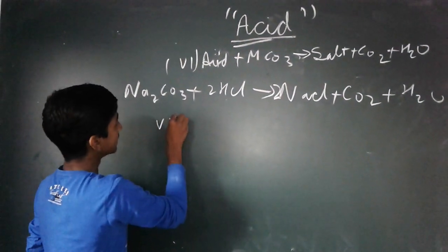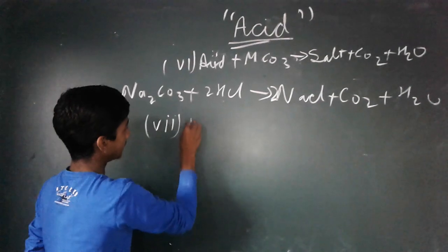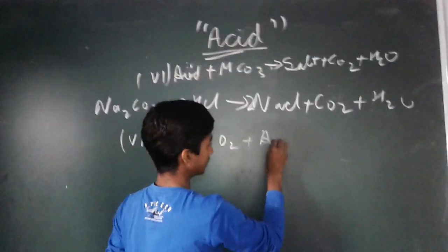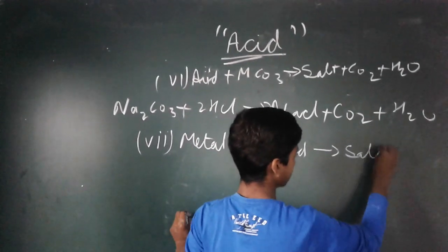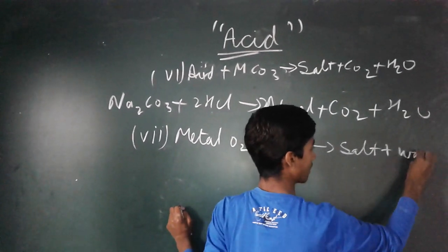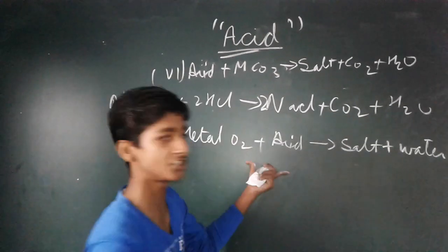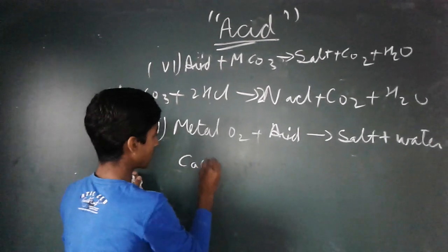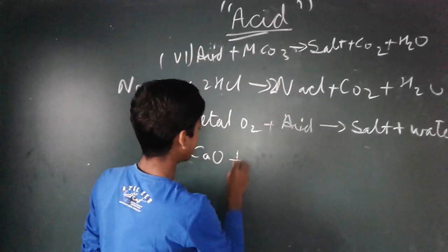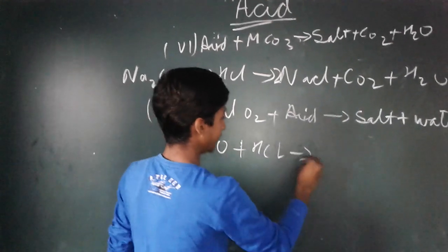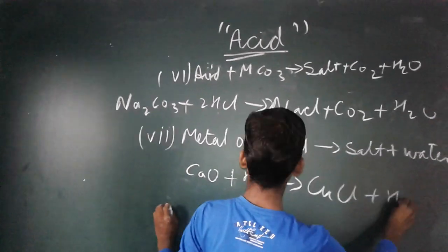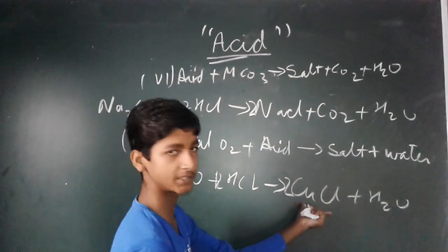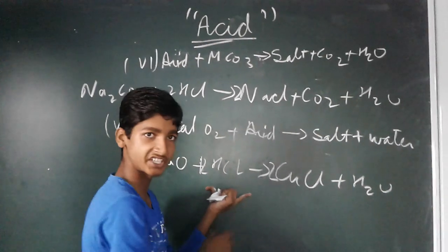The seventh property is that if acid reacts with metal oxide, it will give salt and water. This is also similar to a neutralization reaction. For example, copper oxide plus HCl will produce copper chloride and H₂O. The formation of copper chloride makes it similar to a neutralization reaction.